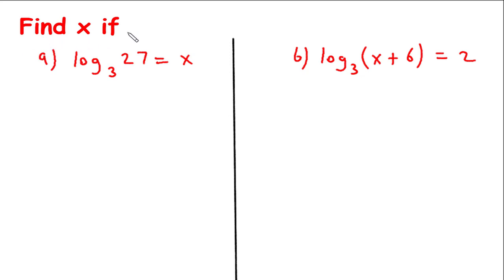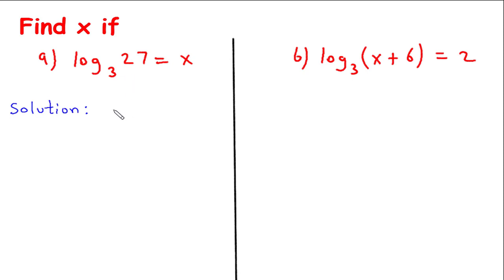Find x if log of 27 to the base 3 is equal to x. Solution: log of 27 to the base 3 is equal to x.